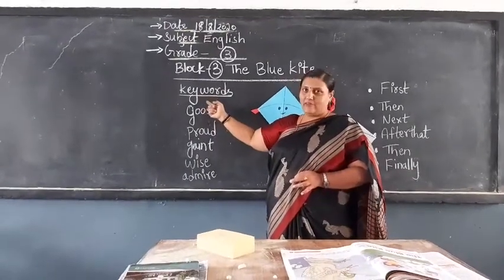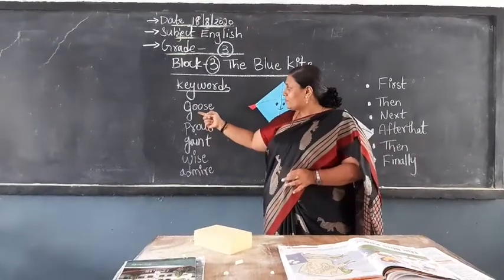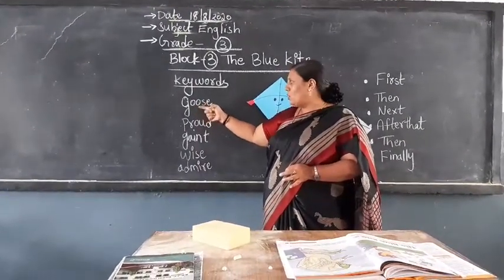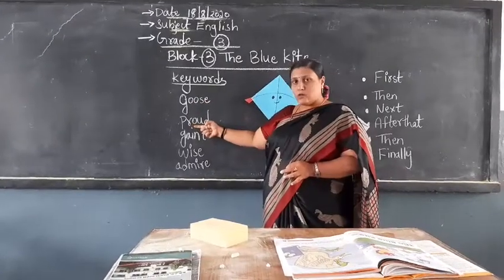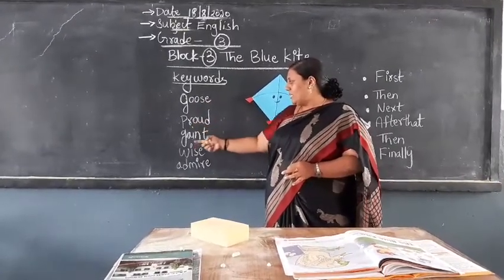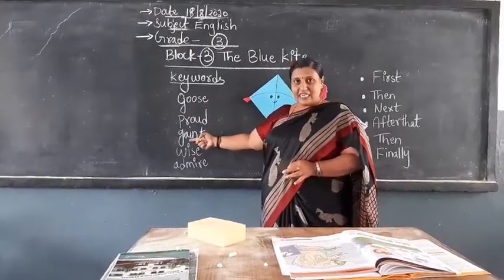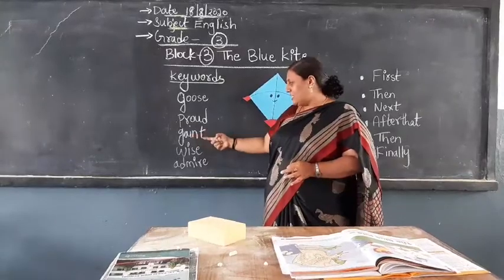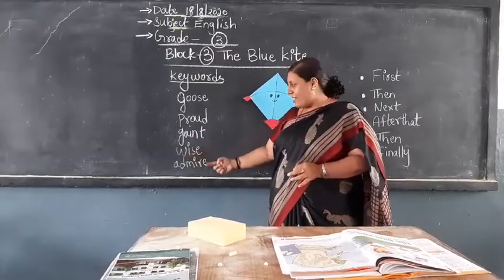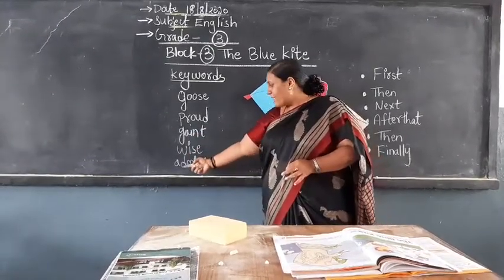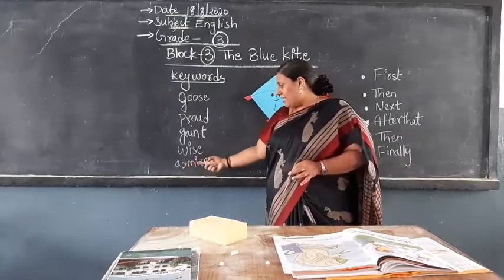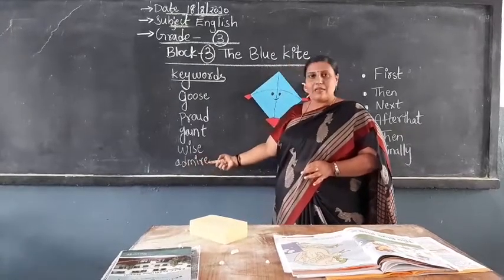Let us see some keywords here. Goose — G-O-O-S-E. Proud — P-R-O-U-D. Giant — G-I-A-N-T. Wise — W-I-S-E. Admire — A-D-M-I-R-E. These are the few keywords of today's lesson.